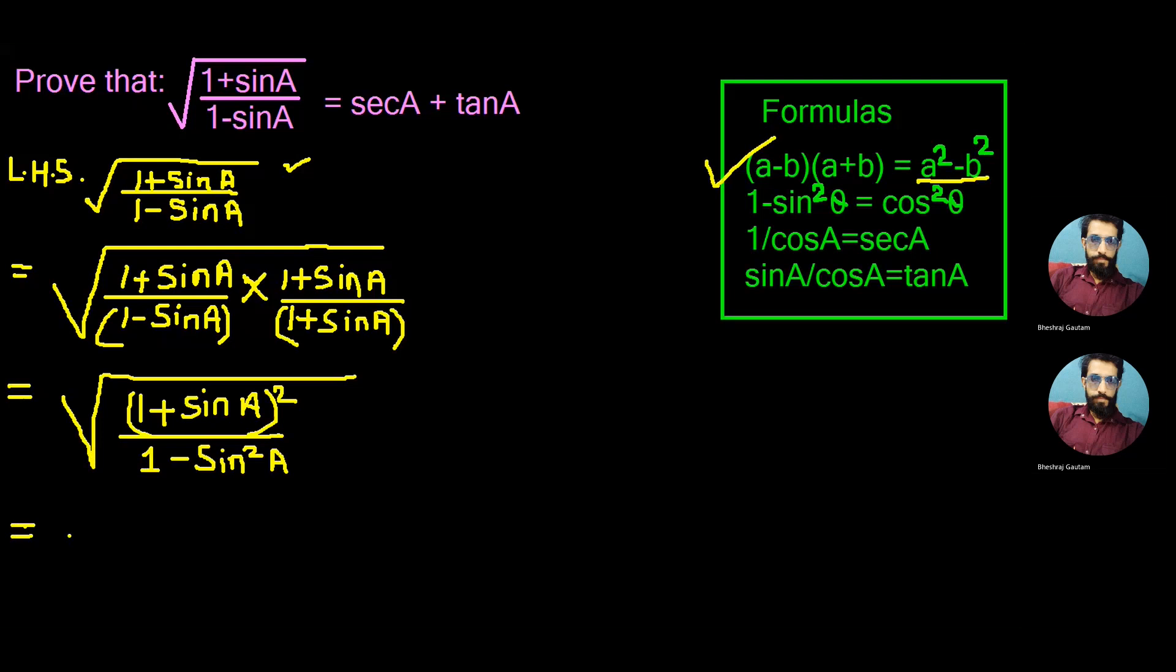Now we begin the other step, first writing one plus sin A whole square as same. Let's convert first this one minus sin square A.